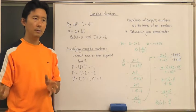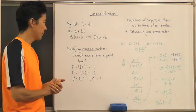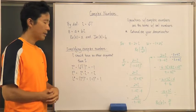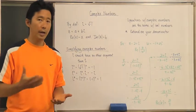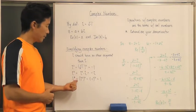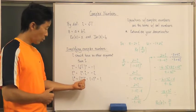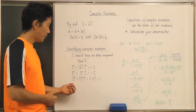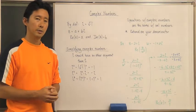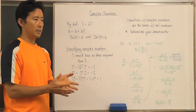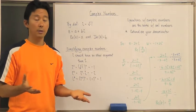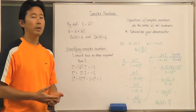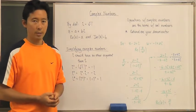If you have i squared, replace it with negative one. i cubed is i squared times i, which gives negative i — it simplifies to something with i to the first power. i to the fourth is i squared squared, which is negative one squared, equal to one. So higher powers of i always reduce to either a real number or i to the first power.